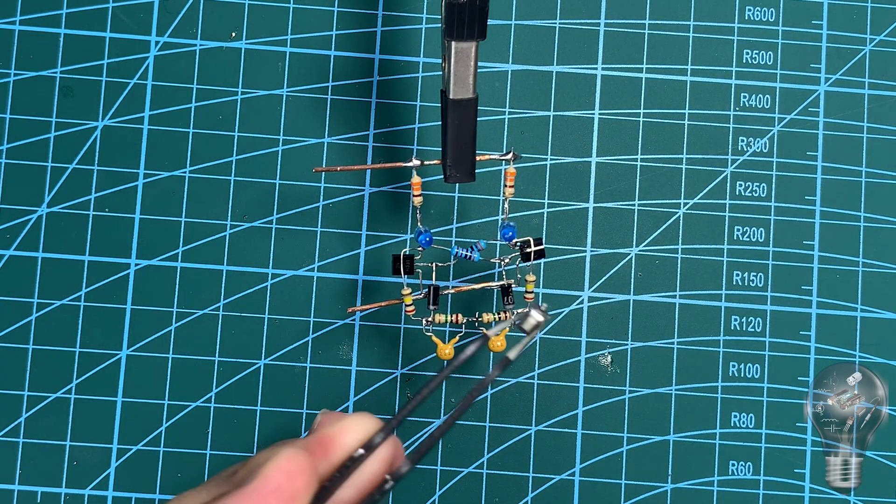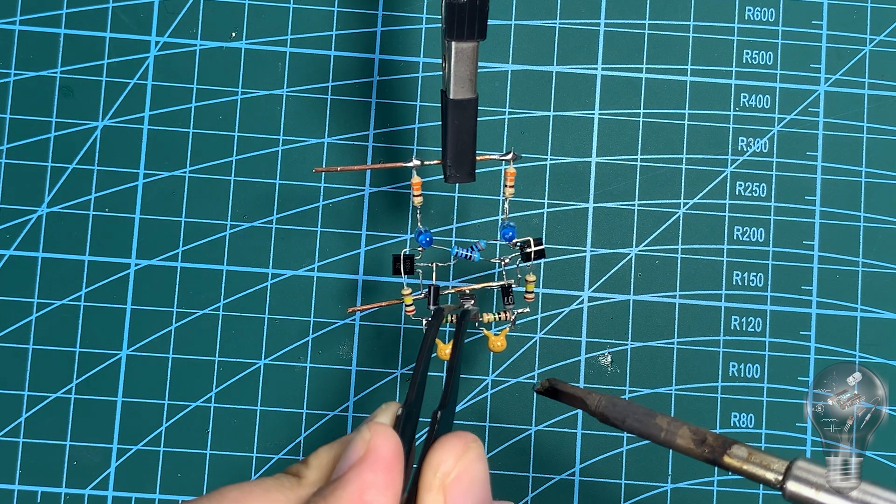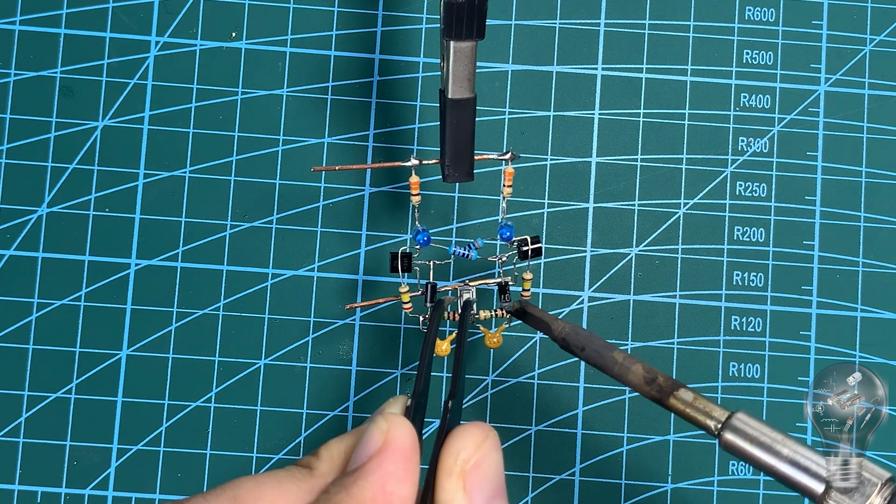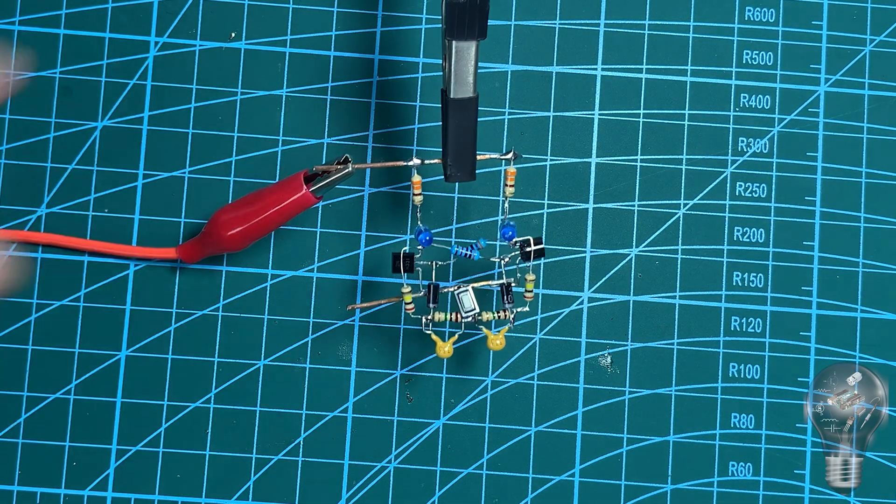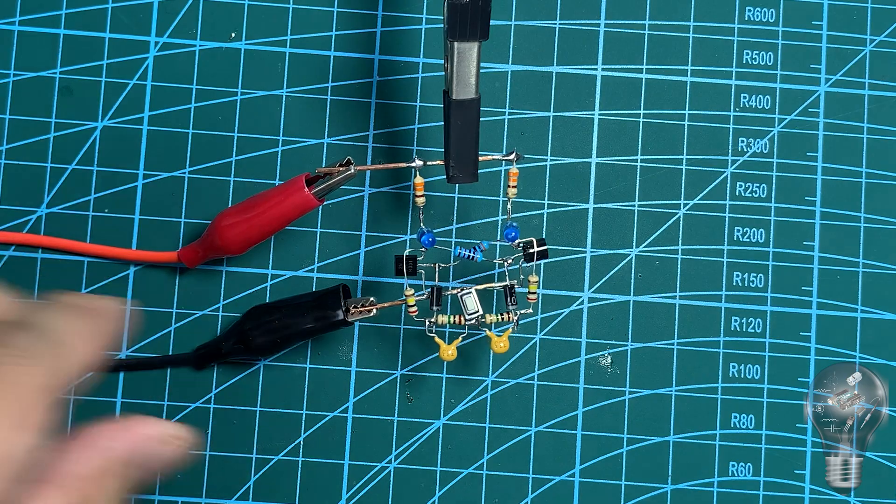So, we have improved the flip-flop circuit from two pushbuttons to a version that only needs one pushbutton. The principle relies on the resistor capacitor network to create pulses and the diode to direct the current, helping the circuit change state alternately with each press.